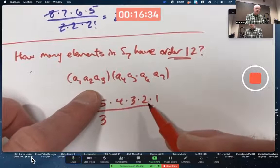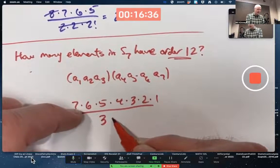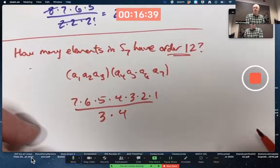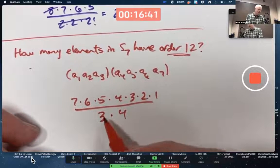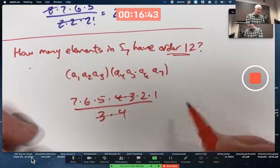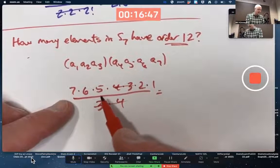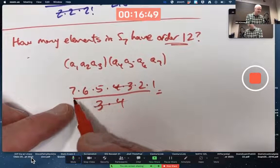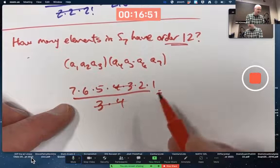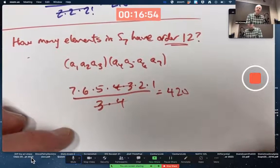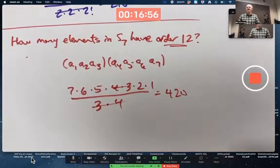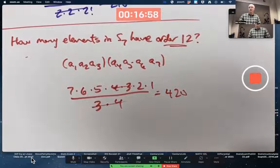Depending on what number you start with. This one could be written in four ways. So ultimately, we just divide by three times four. Cancels with the three times four there. With what's left, I'll just do it in my head. Again, just like before, five times six times seven is 210. Times two is 420. There are 420 elements in S7 that have order 12.